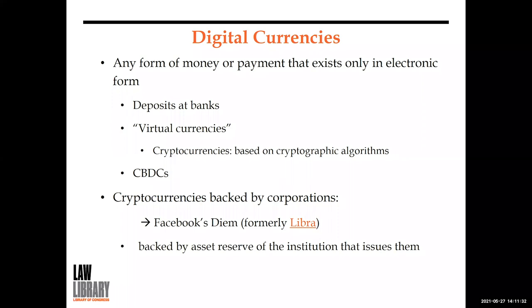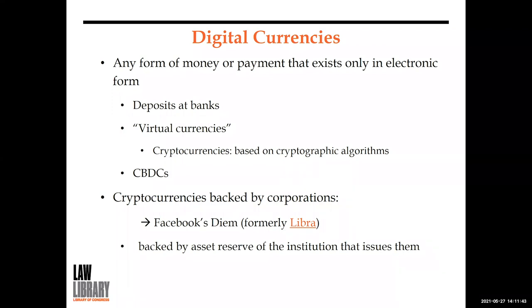Stablecoins are a type of cryptocurrency backed by sovereign fiat currencies or other safe assets such as the US dollar, to stabilize their values — countering the volatility of cryptocurrencies. Most stablecoins issued are pegged to the US dollar. We also need to mention cryptocurrencies backed by corporations, which is one of the reasons cited for why central banks should get into the business of issuing digital currencies.